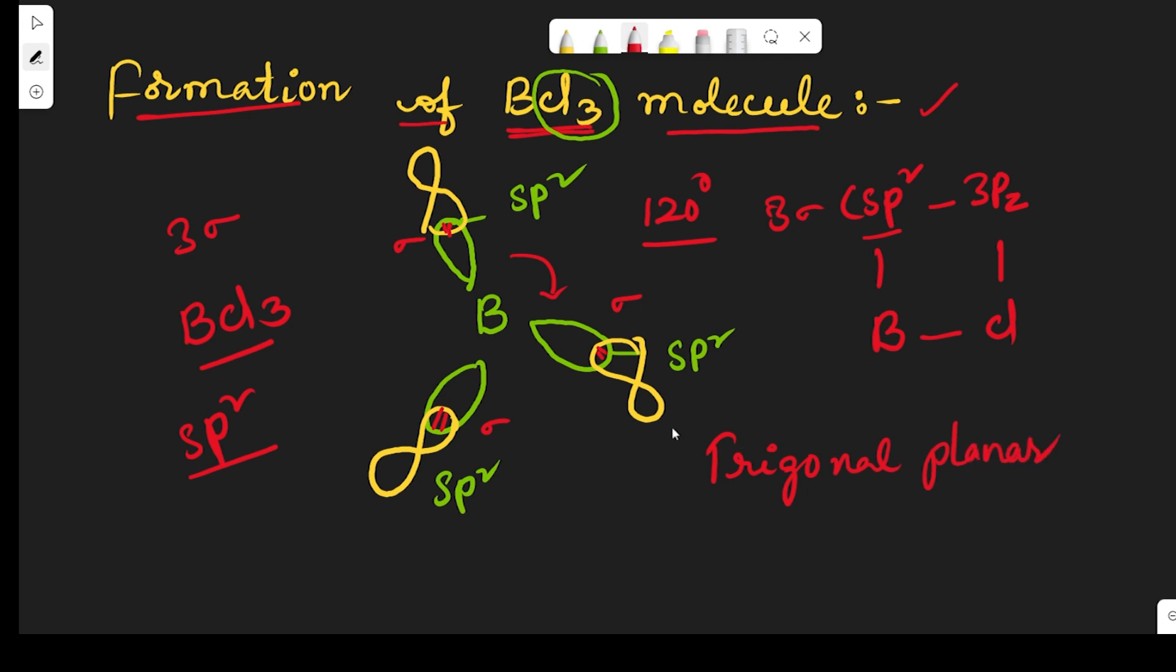So in boron trichloride, the hybridization is sp². There exist three sigma bonds between the sp² hybrid orbitals of boron and 3pz orbitals of chlorine atoms, making an angle of 120 degrees and having a trigonal planar structure. This is how the formation of boron trichloride molecule takes place. Thank you.